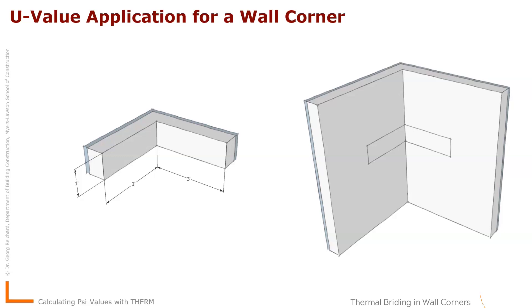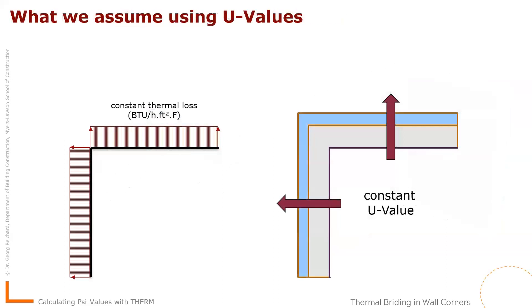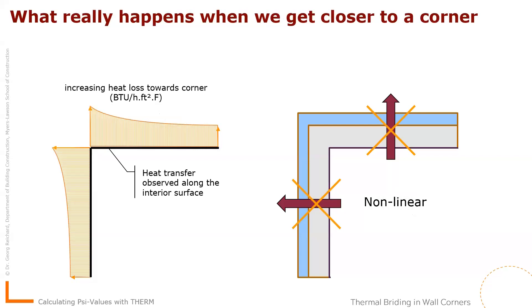So what we do actually here is we calculate the U value all the area into the corner, and that would assume that we have a constant thermal heat loss along the interior edge and this is actually not what exists. So what we have in this case is that because we have much more exterior surface on this corner, there is more draw in the corner and the heat loss will start slowly to climb the further we move into the corner.